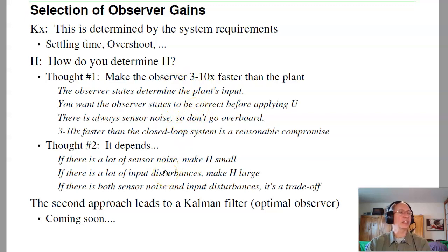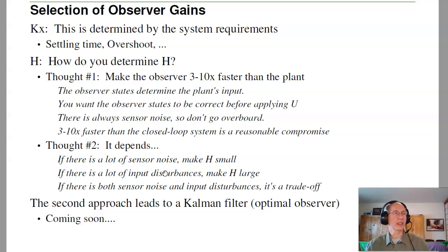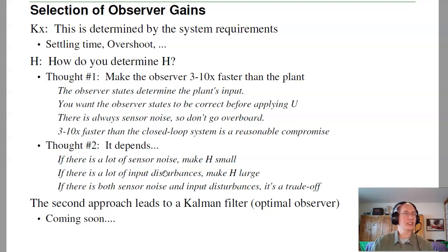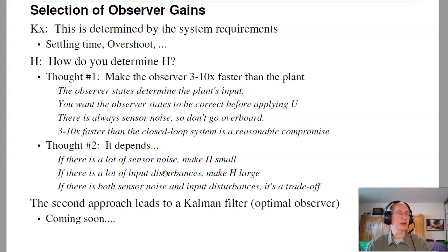A second camp says it depends. If there's a lot of sensor noise, make H small. If there's a lot of input disturbances, make H large. If there's both sensor noise and input disturbances, then it's a trade-off. This second approach kind of leads to a Kalman filter, which is an optimal observer — that's coming up later. But again, it's debatable how to actually choose H.